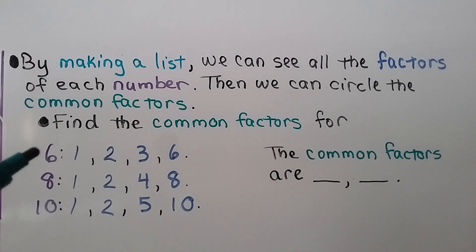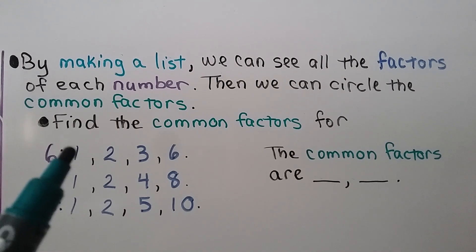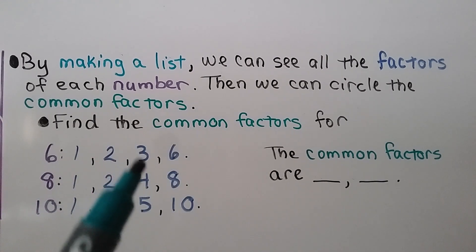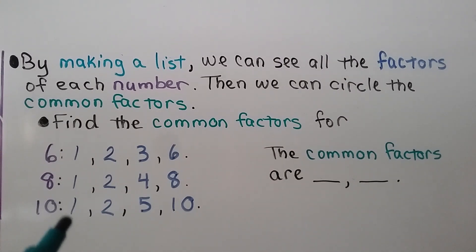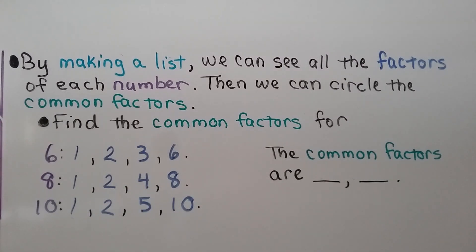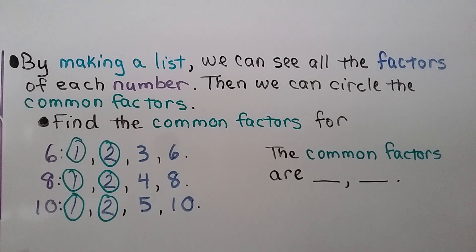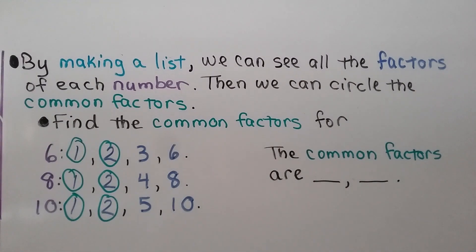Find the common factors for 6, 8, and 10. For 6: 1×6, 2×3. For 8: 1×8, 2×4. For 10 we list its factors too. We circle the factors they have in common — there's a 1 and a 2 — so the common factors are 1 and 2.